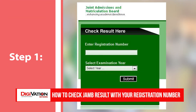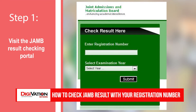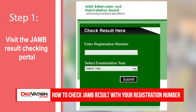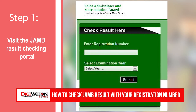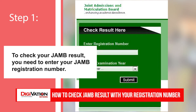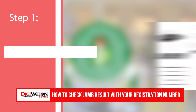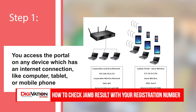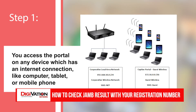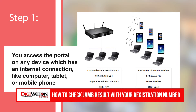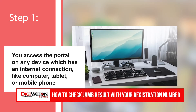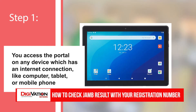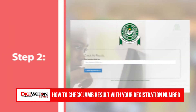Step 1: Visit the JAMB result checking portal. To check your JAMB result, you will access the portal on any device which has an internet connection, like a computer, tablet, or mobile phone.